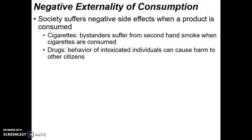Let's start by looking at negative externalities of consumption. This is when society suffers negative side effects when a product is consumed — bad side effects coming from the use of a product. Two examples are cigarettes and drugs. Cigarettes have a negative externality of consumption because bystanders can suffer from secondhand smoke. That's a perfect example of an externality: someone who is outside of the consumption, someone who isn't smoking, still suffers a side effect.